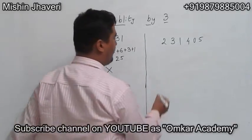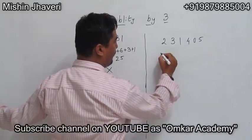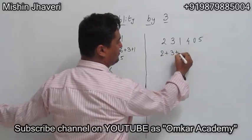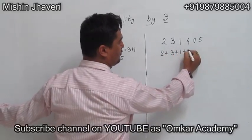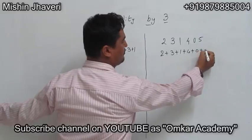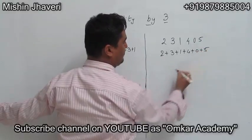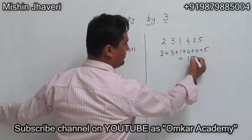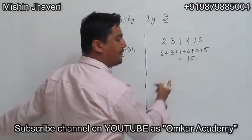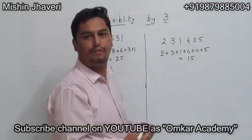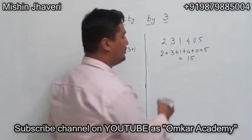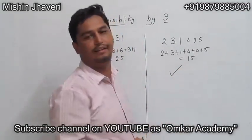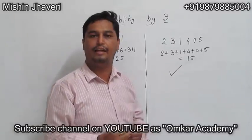The same thing we will be doing for this — add all the digits. The answer is 15. As 15 is a multiple of 3, so this number is also divisible by 3. Thank you.